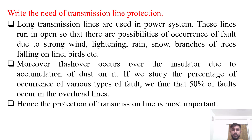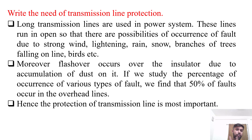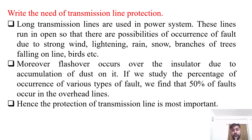The need for transmission line protection: long transmission lines are used in power systems, and these lines run in the open, so there are possibilities of fault occurrence due to strong wind, lightning, rain, snow, branches of trees falling over the line, birds, etc. Moreover, flashover occurs over the insulator due to accumulation of dust on it.